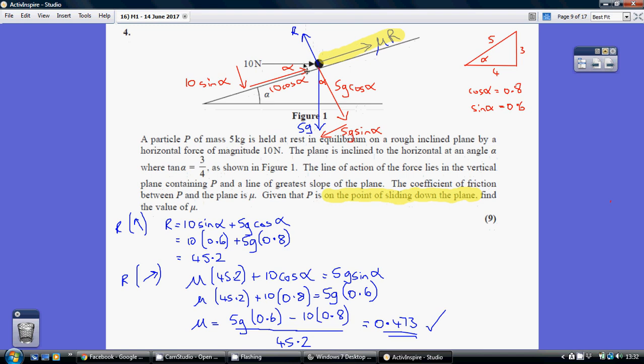So I've broken the 10 newtons down to being this 10 sin alpha and 10 cos alpha. Remember, this is also an alpha degrees here because of the alternate angles being equal rule. And obviously that side is opposite, so that's 10 sin alpha and that's adjacent, 10 cos alpha.